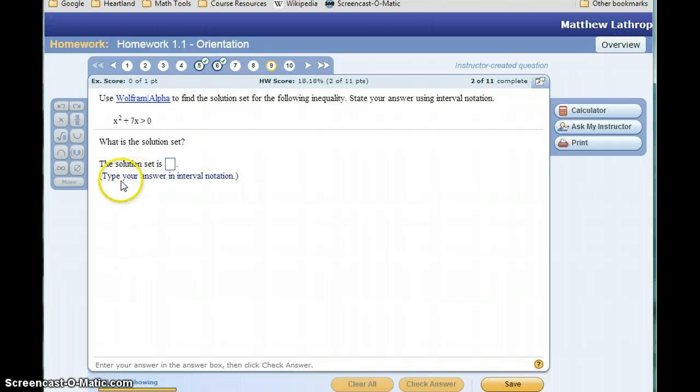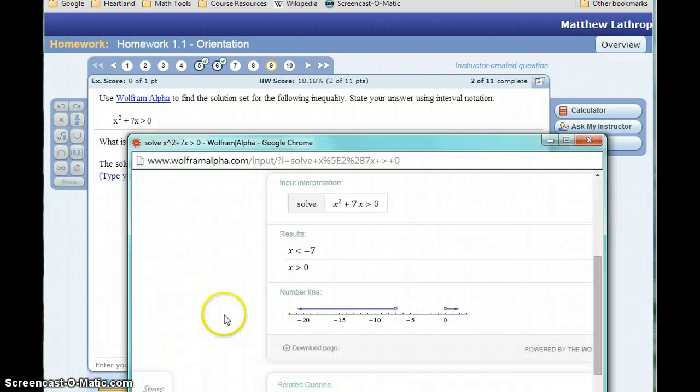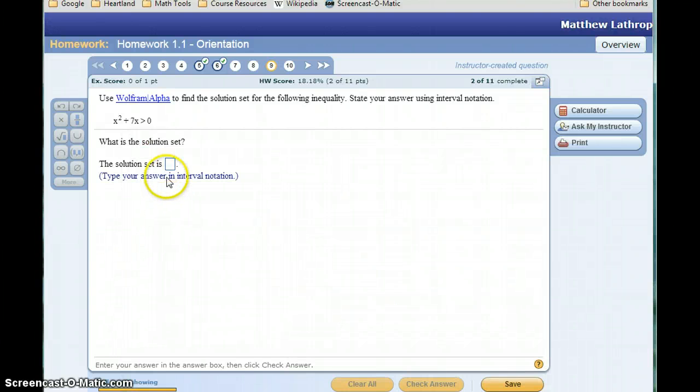One trick here is that this question is actually asking for that answer in interval notation. So the first part of that answer was telling us that x should be less than negative 7. In interval notation, that would mean negative infinity to negative 7, with rounded parentheses, since this is a strict inequality.